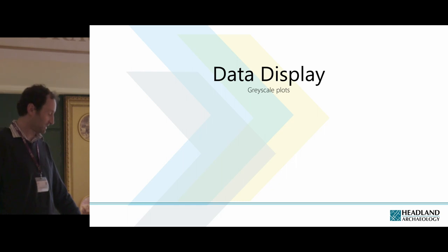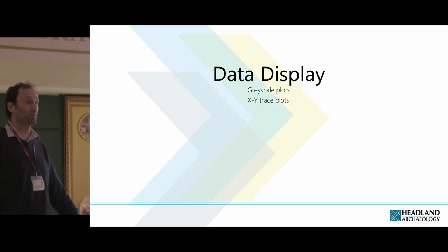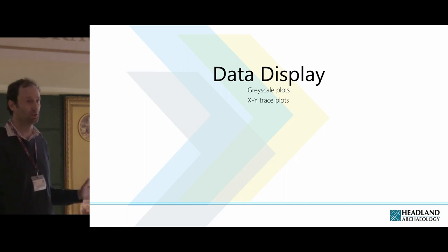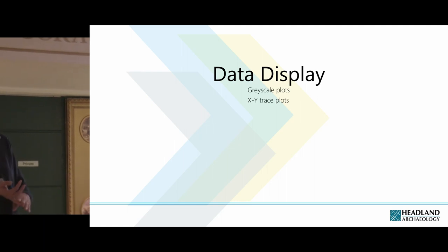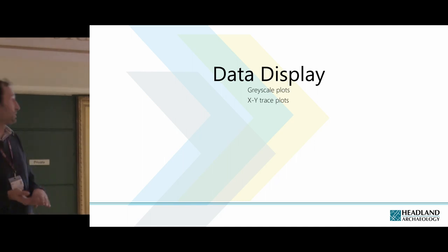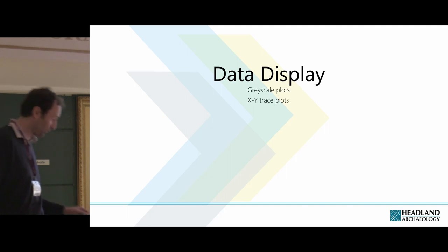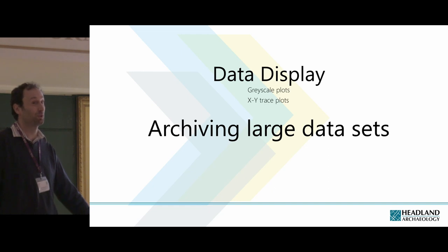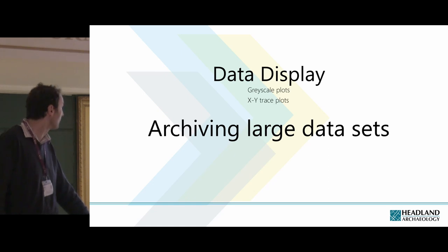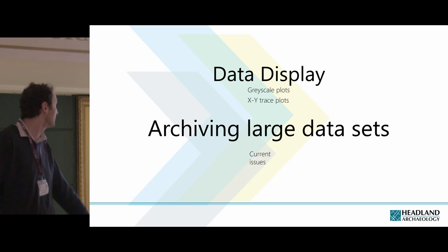Normally you display everything as a grayscale plot or an XY trace plot. XY trace plots have now started to become out of fashion. The new EAC guidelines don't really talk about XY trace plots — it's all about the grayscale plots, shown in different types of formats which can cause problems. We'd like to suggest people still use XY trace plots. And then on archiving, how do we archive these large data sets? The ADS can't really handle anything that's not collected by a dual sensor Barkington — it's about a hectare in size — so we're a bit troubled by this at the moment.